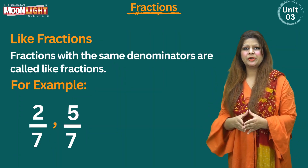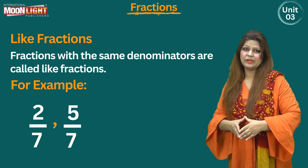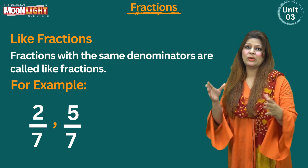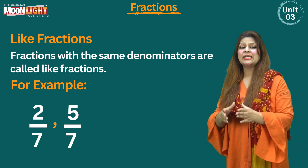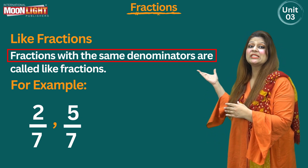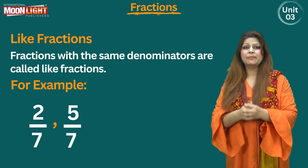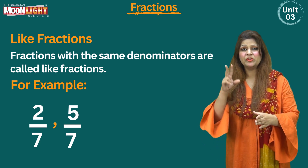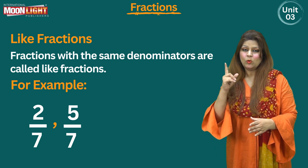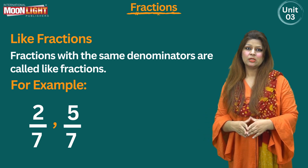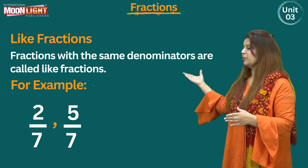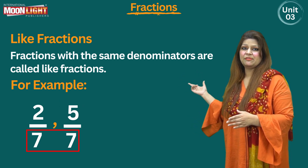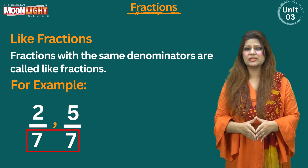Now let's recall like fractions, which we covered in class three. Like fractions are fractions with the same denominators. For example, 2/7 and 5/7 — both have 7 as the denominator, so they are like fractions.